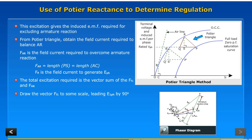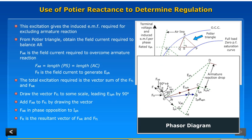Draw the vector FF1 to some scale, leading E1 pH by 90 degrees. Add FAR to FF1 by drawing the vector FAR in phase opposition to IPH. FAR is the resultant vector of FAR and FF1.